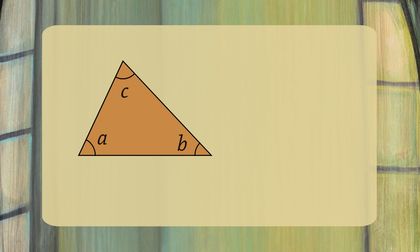We know that the sum of the angles of any triangle is 180 degrees. This means that if you know two of the angles, you can find the third by subtraction.